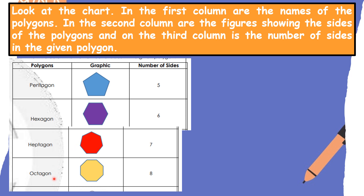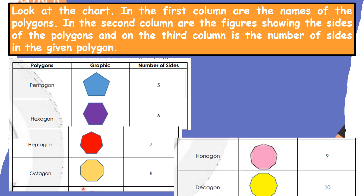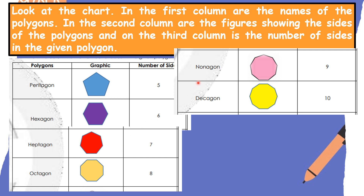Octagon — the prefix of octagon is "octa" which means eight. Let us count: one, two, three, four, five, six, seven, eight. Correct. Now let's have nonagon. The prefix is "nona" which means nine. We have one, two, three, four, five, six, seven, eight, nine. The figure is correct.